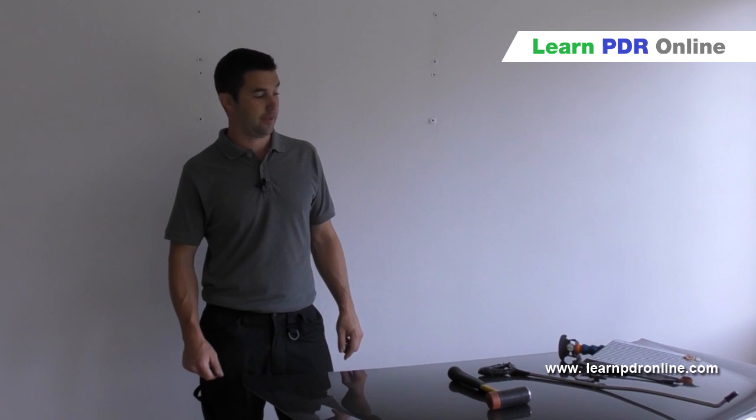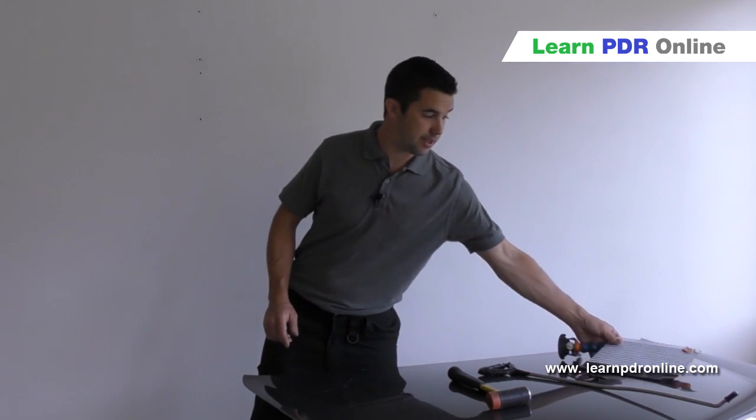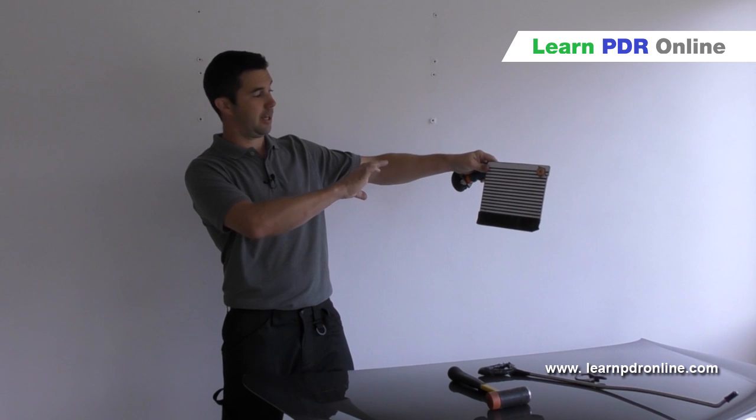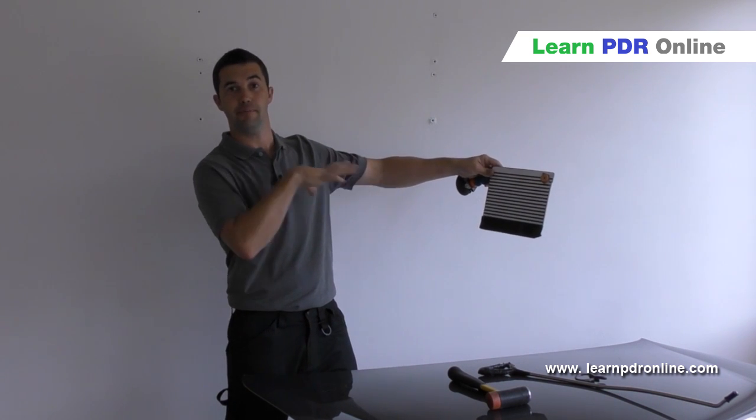Number seven on the list is to cross-check your work. Now it's very easy, particularly with a lined board, to take a dent out and have it look like it's perfect from one position.